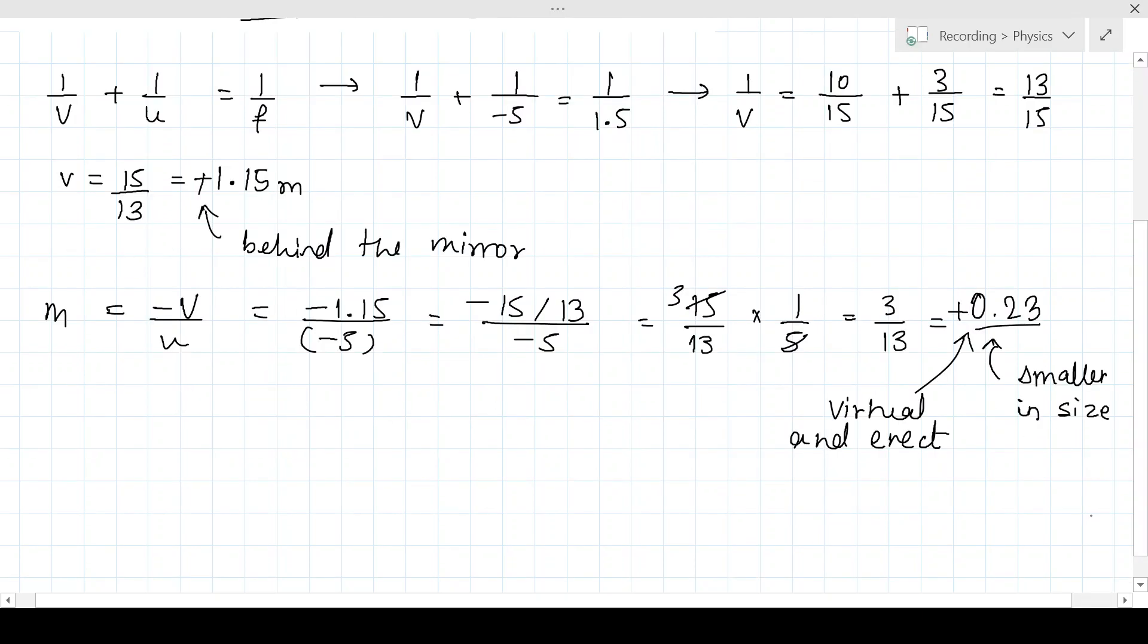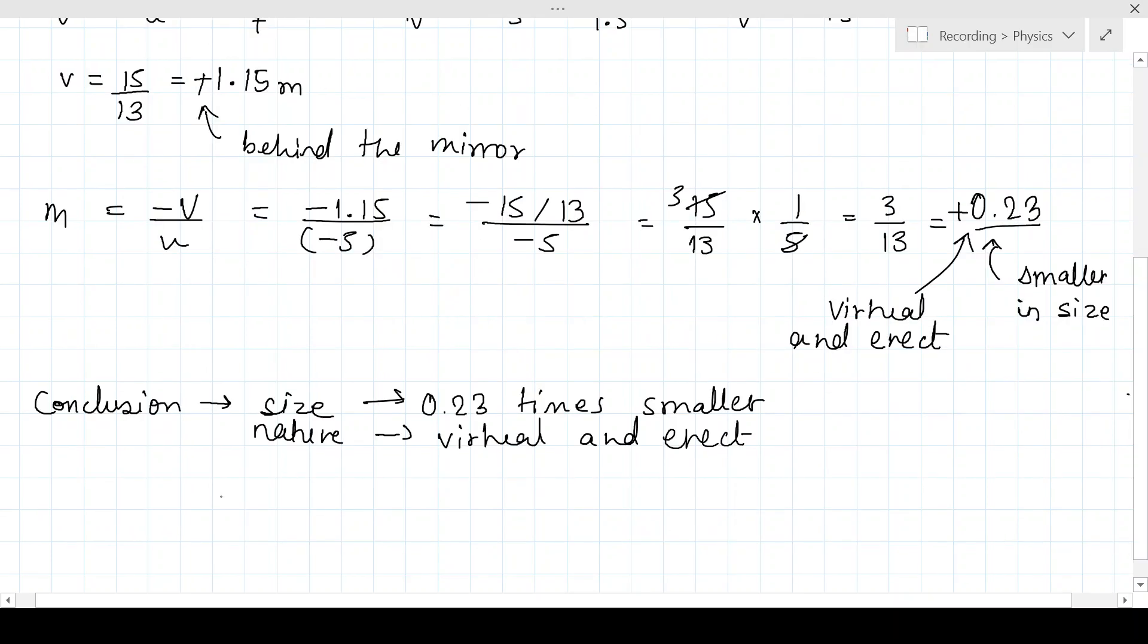So your final conclusion is: the size of the image is 0.23 times smaller, the nature of the image is virtual and erect, and the position of the image is 1.15 meters behind the mirror.